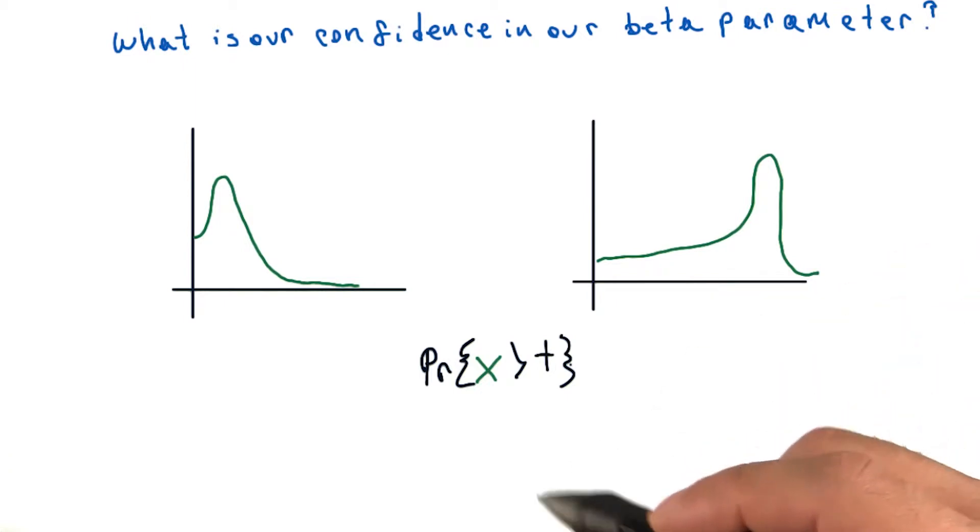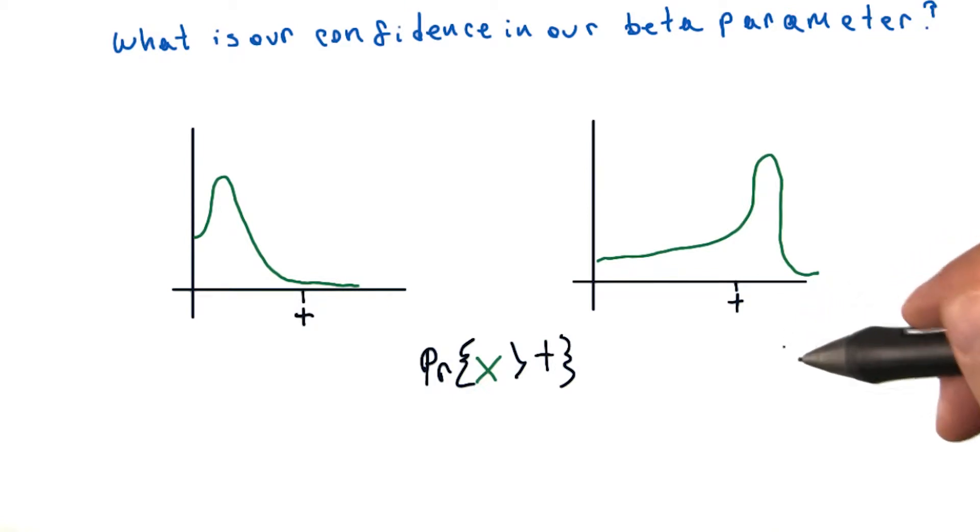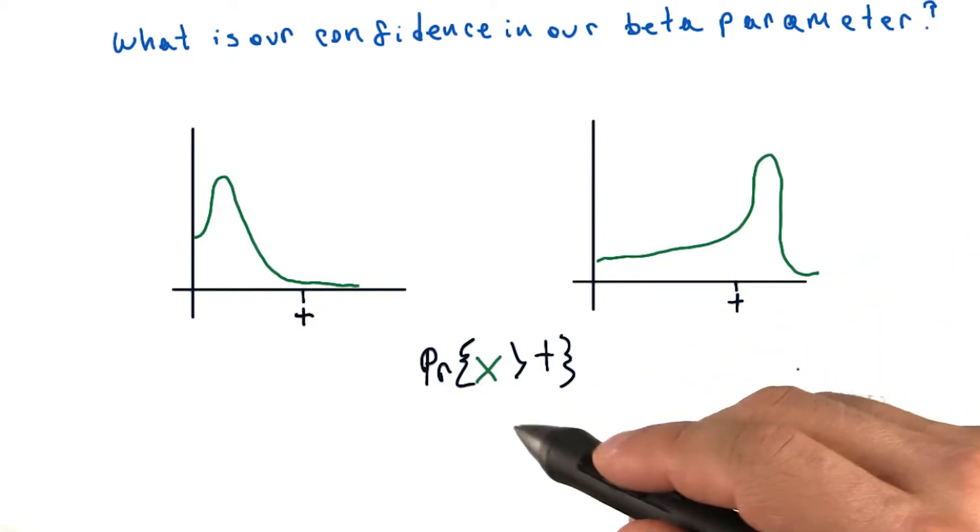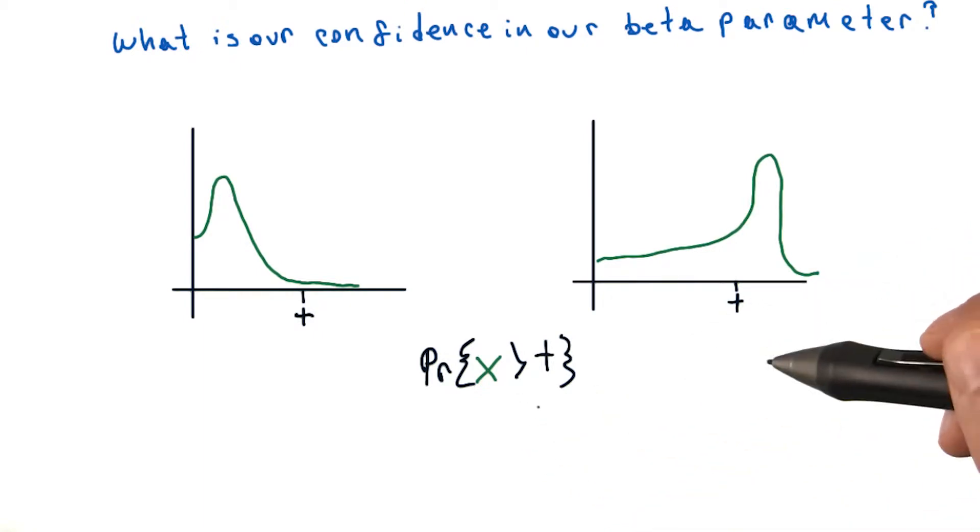We can ask the question, what's the probability that the random variable x will be greater than a value t? For the graph on the right, more of the probability mass is over on the right side. So it's not surprising that the probability that x is greater than t is larger for the graph on the right than the one on the left.